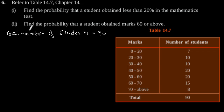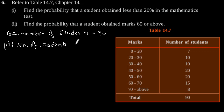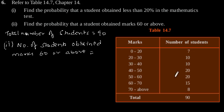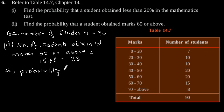Now the second part: find the probability that a student obtained marks 60 or above. Number of students who obtained marks 60 or above is equal to 15 plus 8, which is equal to 23. So the probability that a student obtained marks 60 or above is 23 by 90, which is our answer.